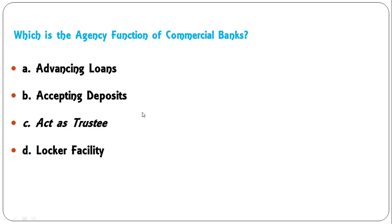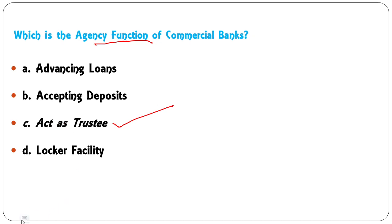Which is the agency function of commercial bank? Options: advancing loans, accepting deposit, act as trustee, or locker facility? Advancing loans and accepting deposit are primary functions. Act as trustee comes under agency function. So C is the correct answer here.